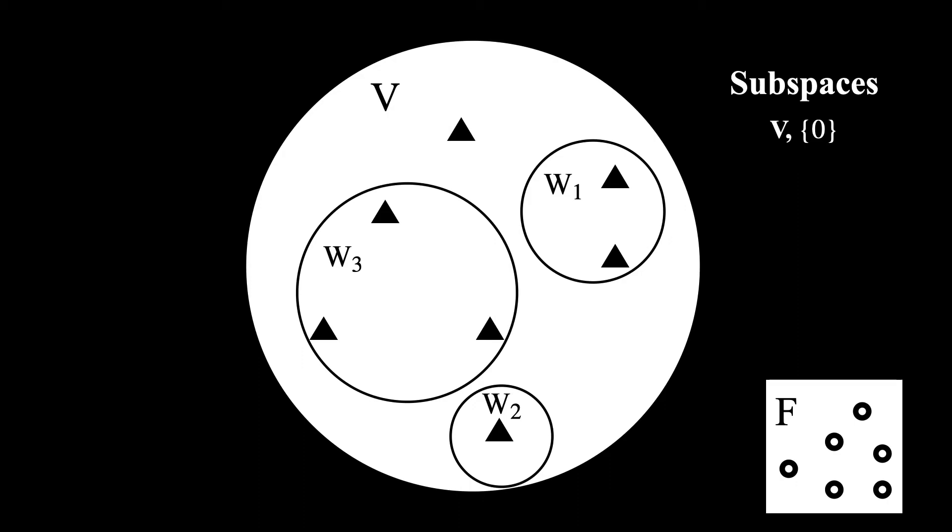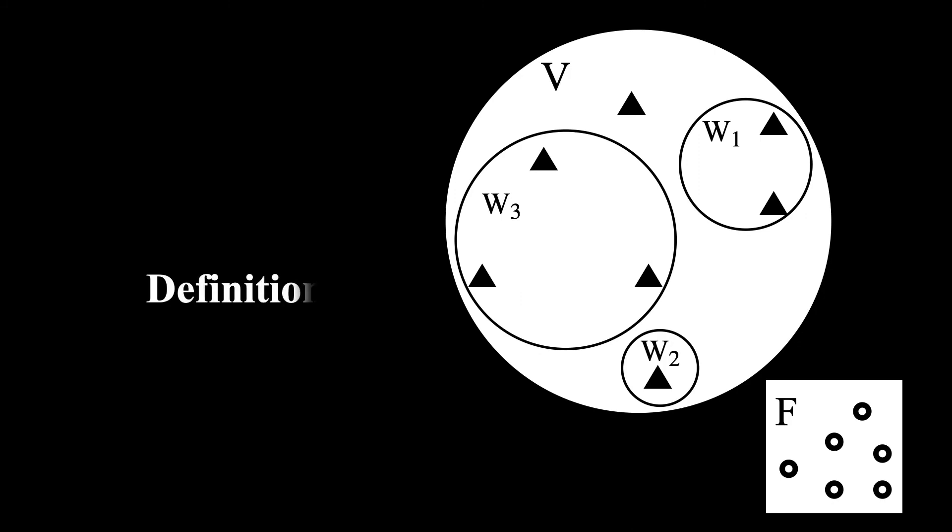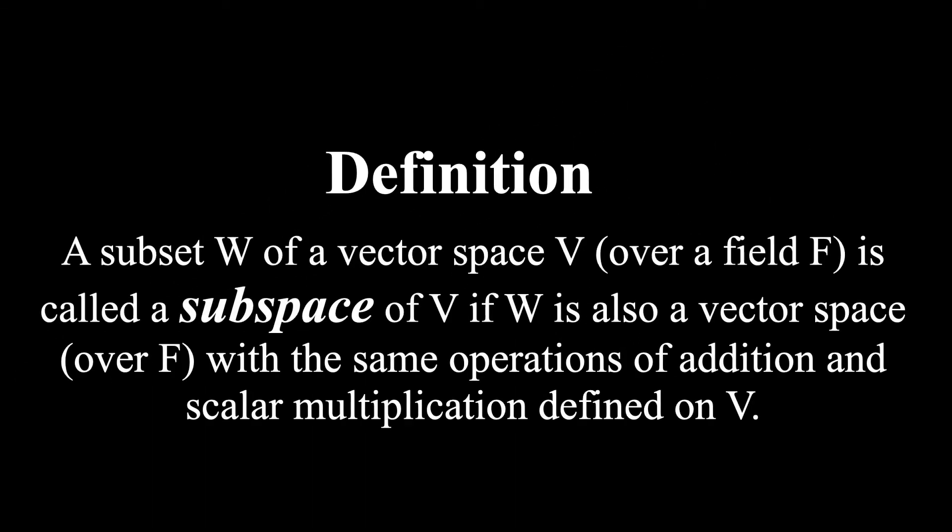Now that we've journeyed through these examples illustrating the concepts of relation and structure and how subspaces fit into all this, here's a definition you'd see in any linear algebra textbook. As you can see, the requirement is that the subset needs to have the structure of being a vector space in order to be a subspace. I hope that with the intuition I provided, this makes complete sense to you now.